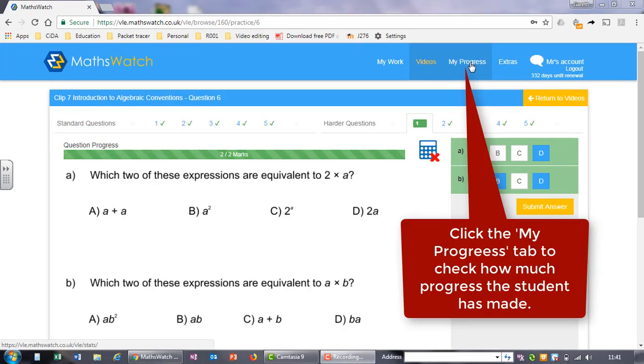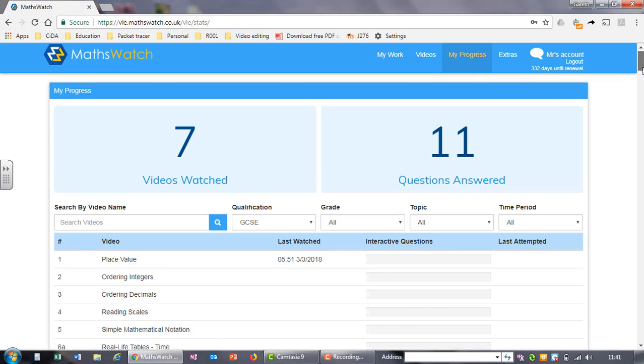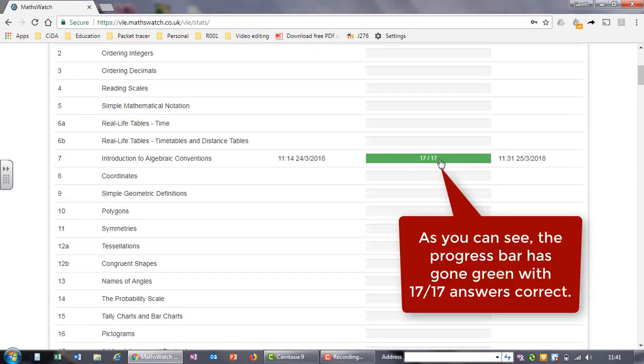Click on the My Progress tab to check how much progress the student has made. As you can see, the progress bar has gone green with 17 out of 17 answers correct.